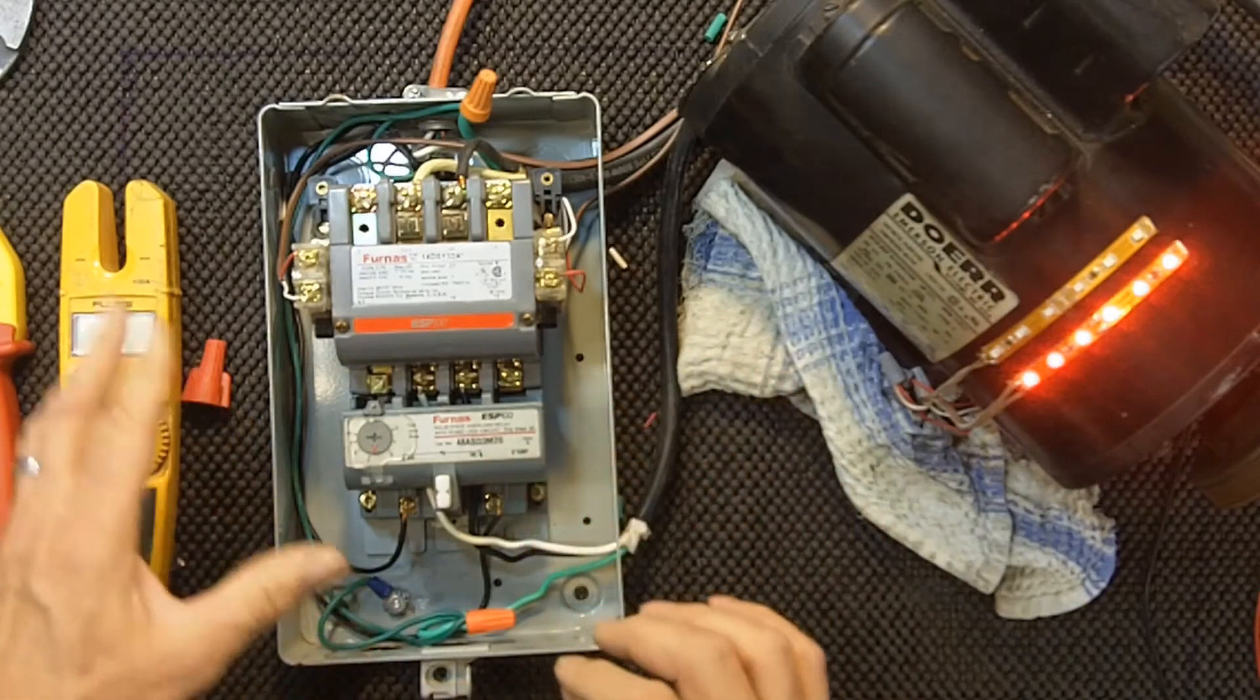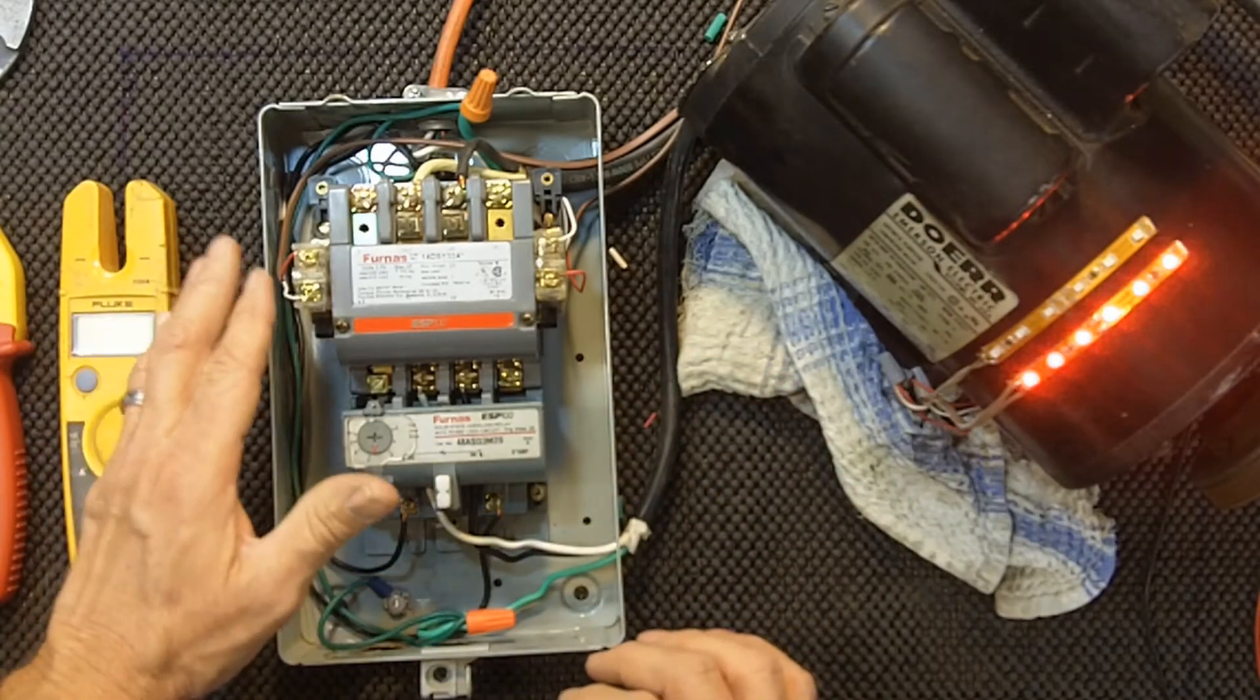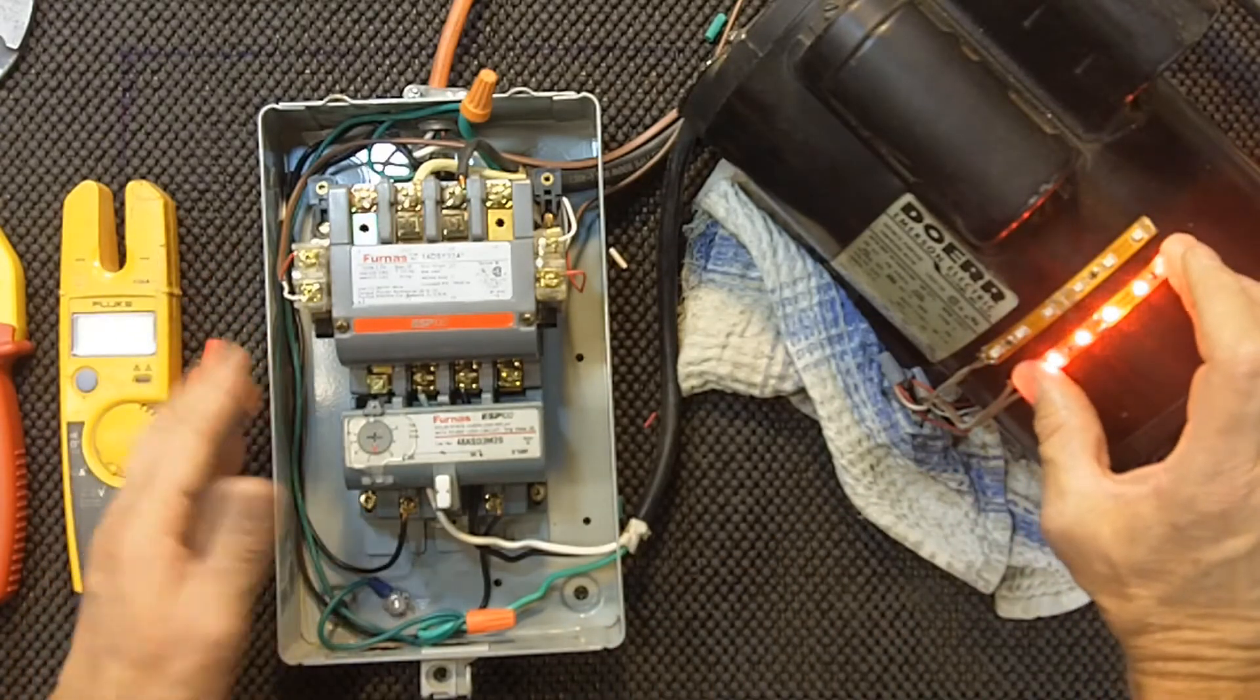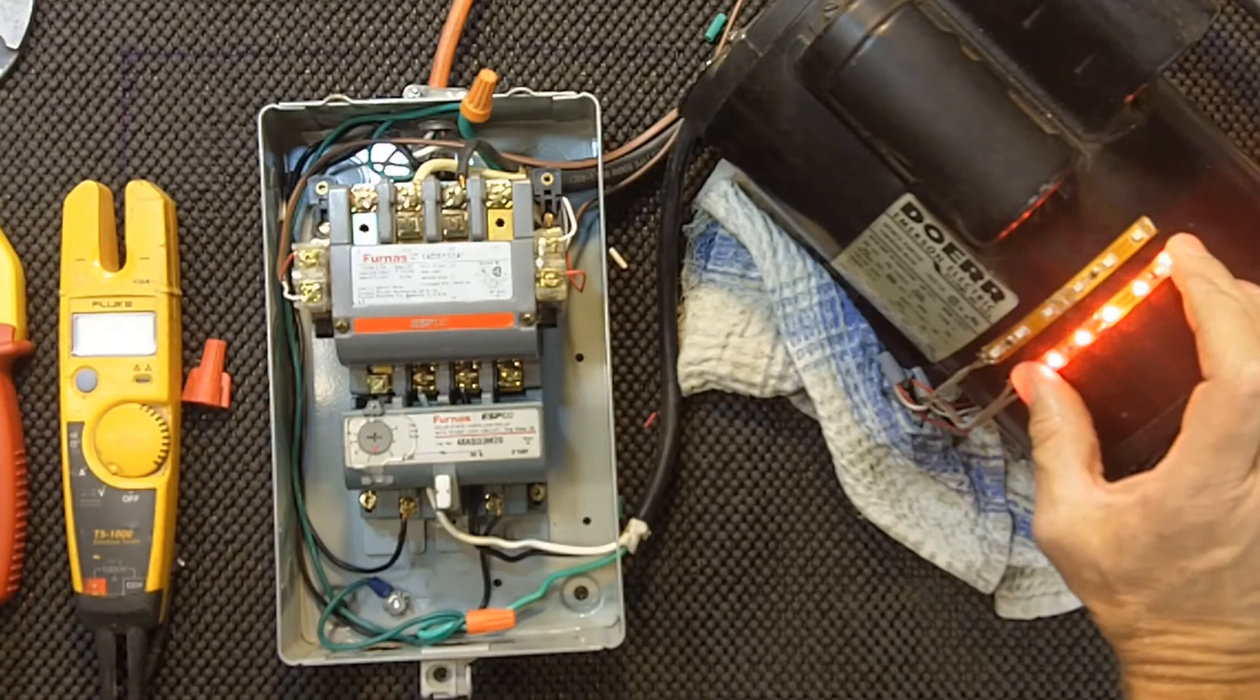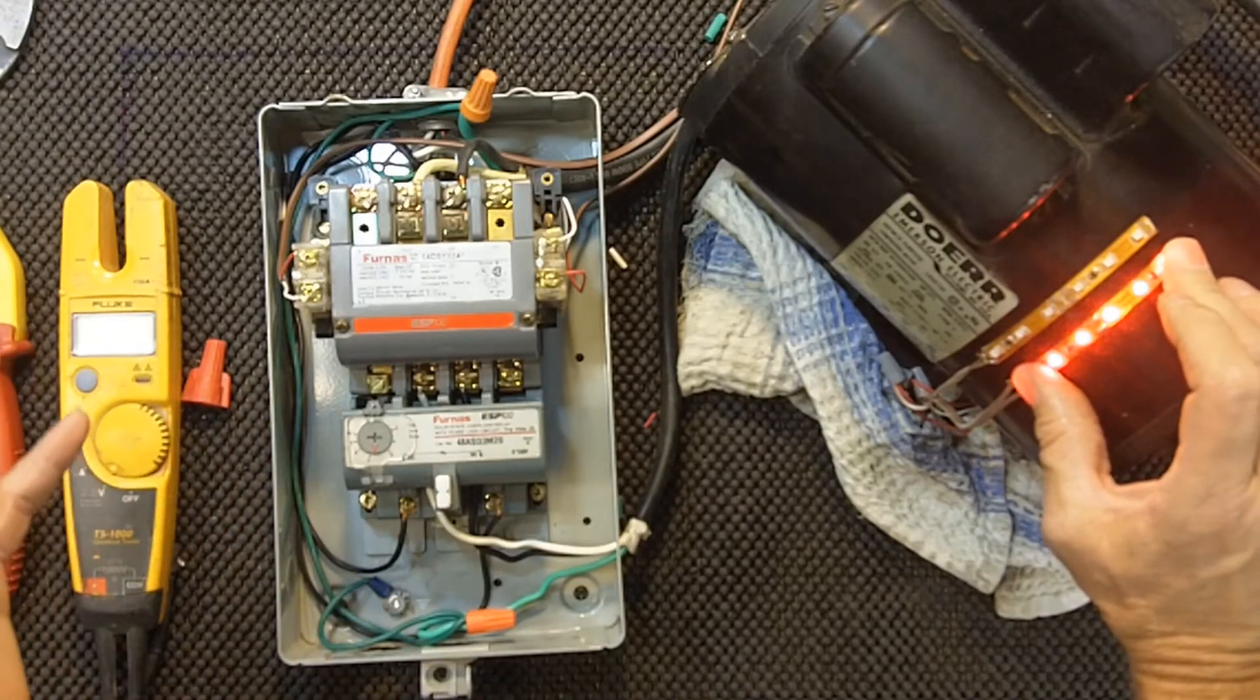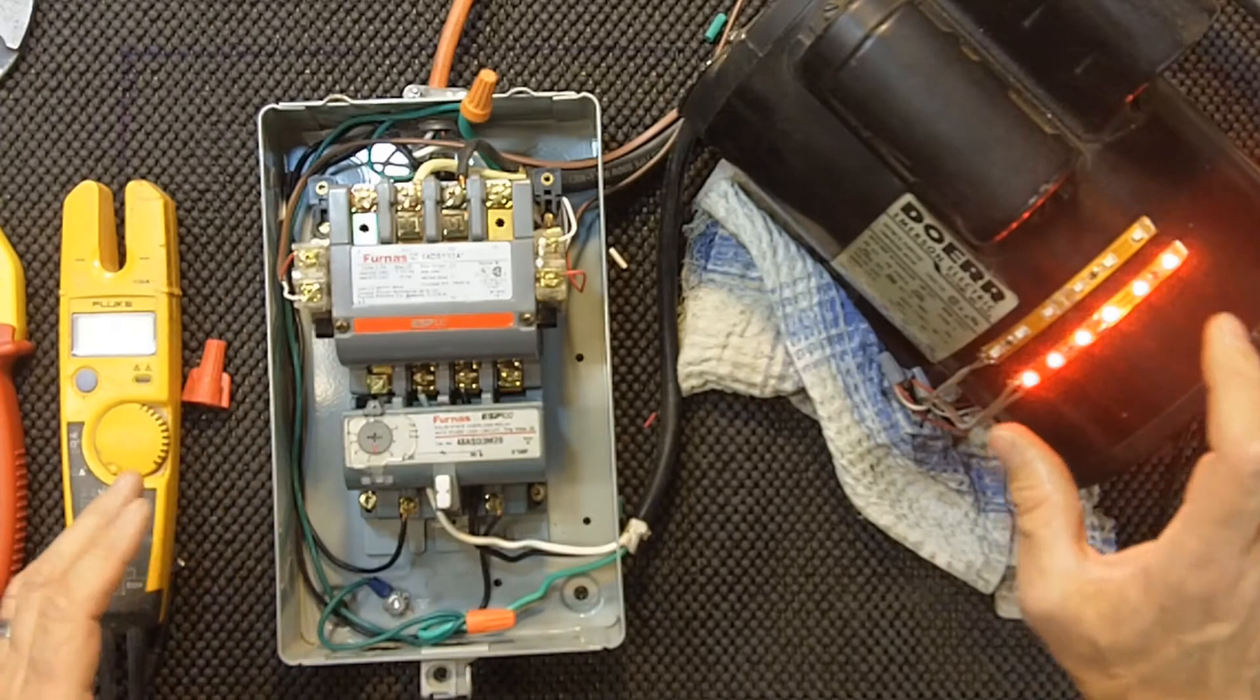So what will happen here is the normally closed contact on here is the red lights. In other words, the motor's not running, so if you're in another room and you can't hear whether the machine's running or not, then this is just an indication.